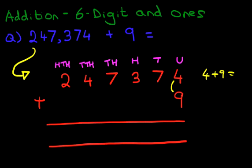4 plus 9. What is 4 plus 9? That's very simple. It's 13. So we've got 1 here and 3 here.